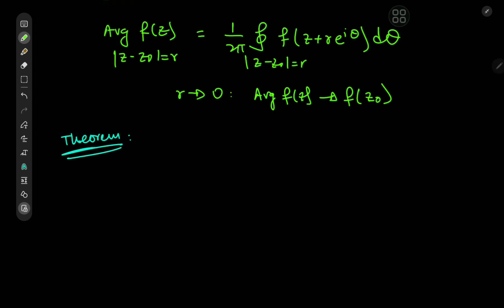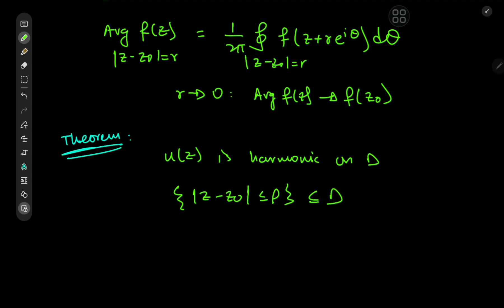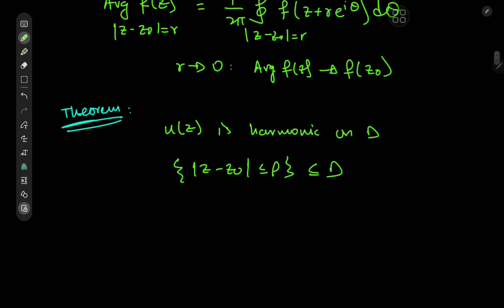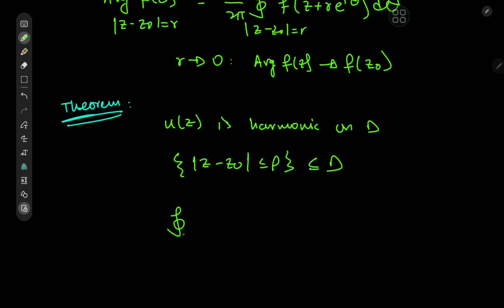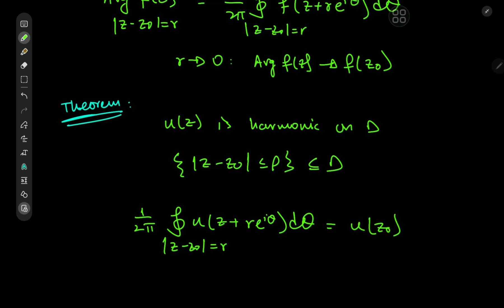Now, what exactly is the theorem? Well, the theorem needs a function u of z that is harmonic on some domain d, and again we need to consider a disk — the absolute value of z minus z-naught less than or equal to rho — contained within d. In this case, the average value of the function, that is 1 over 2pi times the integral over the circle centered at z-naught of radius r (of course less than rho), of u of z-naught plus r times e to the i-theta d-theta, equals the value of the function at the center.